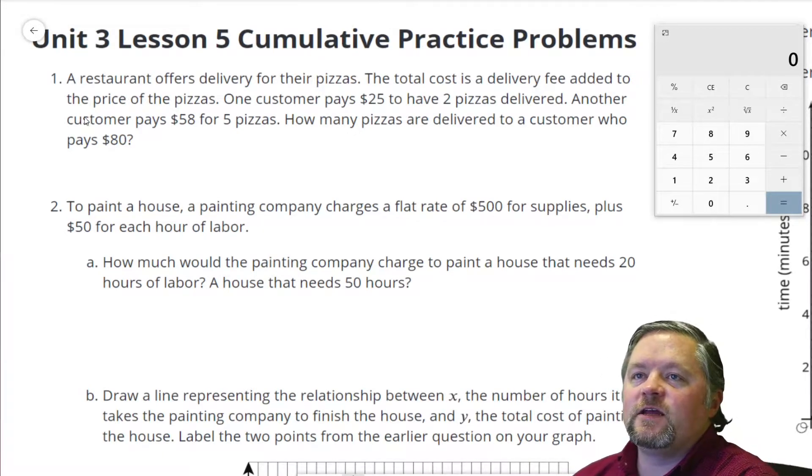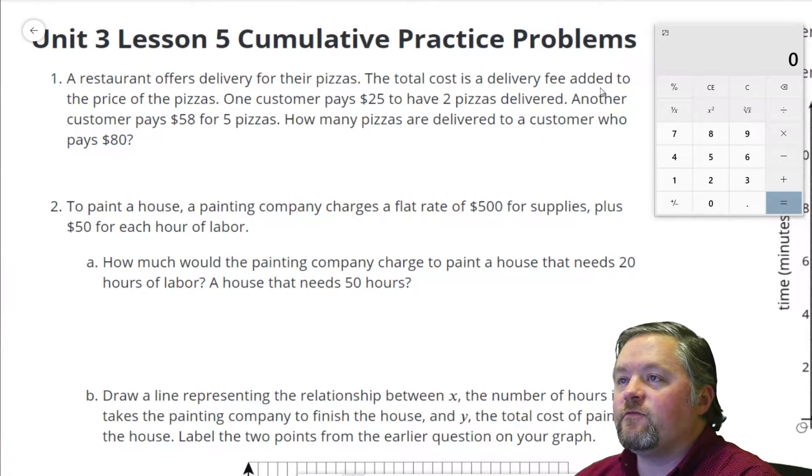Our first problem here is a restaurant offers delivery for their pizzas. The total cost is a delivery fee added to the price of the pizzas. One customer pays $25 to have two pizzas delivered. Another customer pays $58 for five pizzas. How many pizzas are delivered to a customer who pays $80?